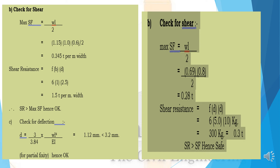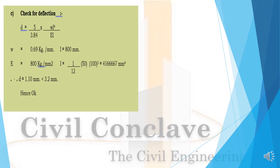Check for shear on secondary joist: maximum shear force = WL/2 = 0.69 × 0.8 / 2 = 0.28 ton. Shear resistance = F × B × D = 6 × 5 × 10 = 300 kg = 0.3 ton. SR > shear force, hence safe. Check for deflection: D = (5/384) × WL⁴/EI, where W = 0.69 kg/mm, L = 800 mm, E = 800 kg/mm², I = (1/12) × 50 × 100³ = 4,166,667 mm⁴. Therefore D = 1.10 mm < 3.2 mm, hence okay. Deflection image has been shown.